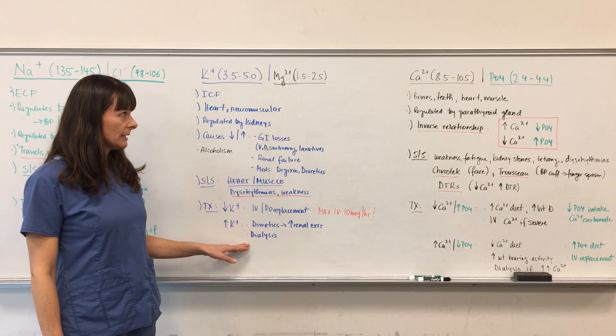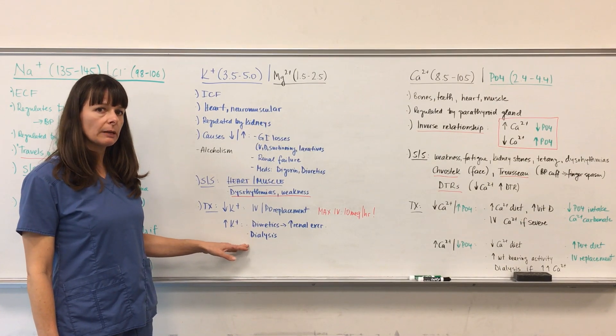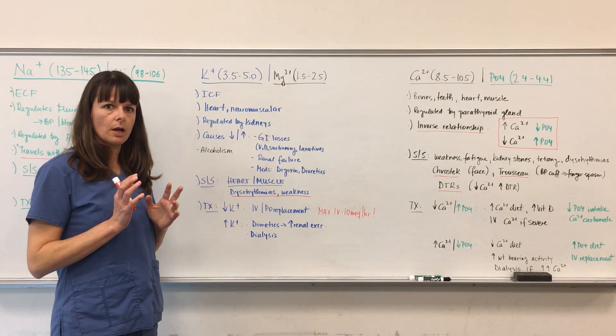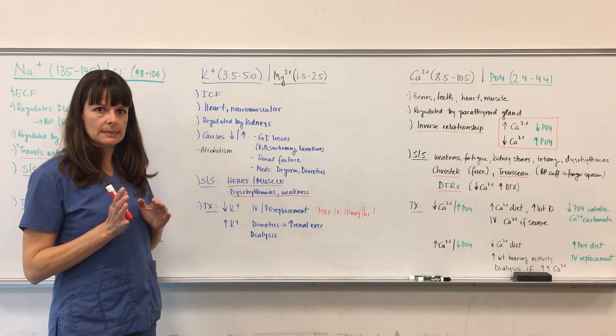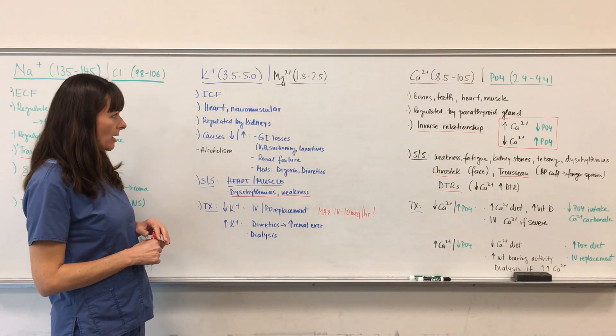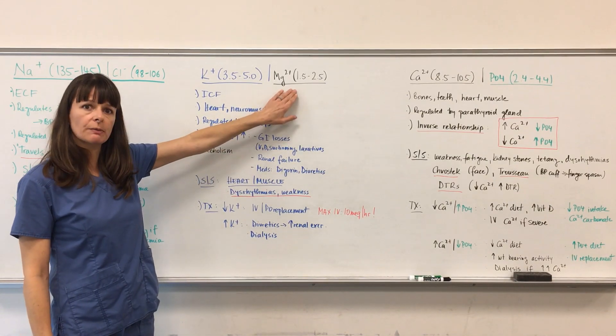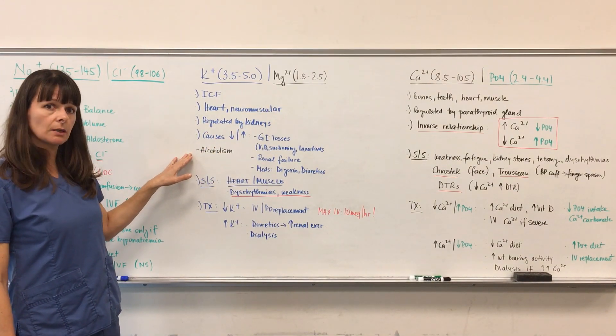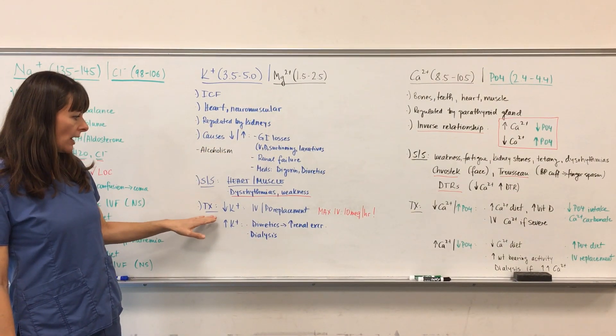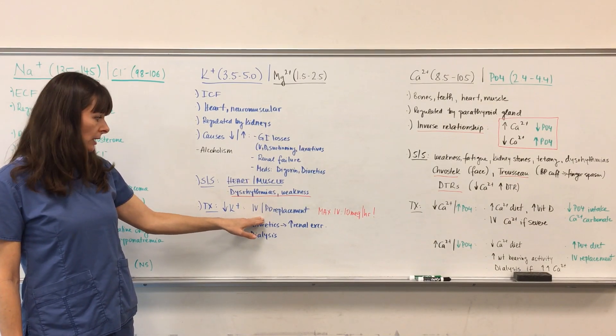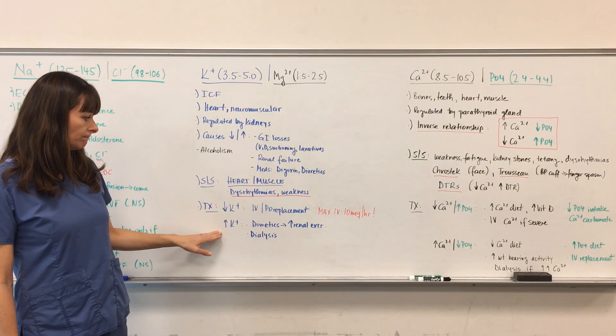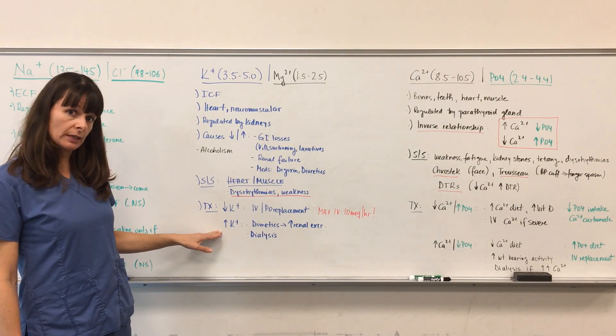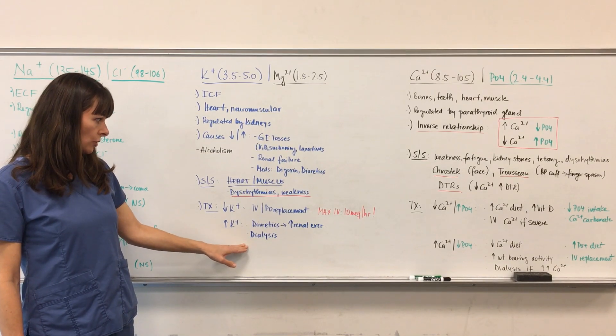Magnesium and potassium like to travel together. If magnesium is low, potassium will be low. If potassium is high, magnesium will be high. Another major cause for magnesium deficiency is alcoholism. For magnesium, we're going to have to replace it orally or IV, and if it gets really high, we'll also have to put the patient on dialysis.